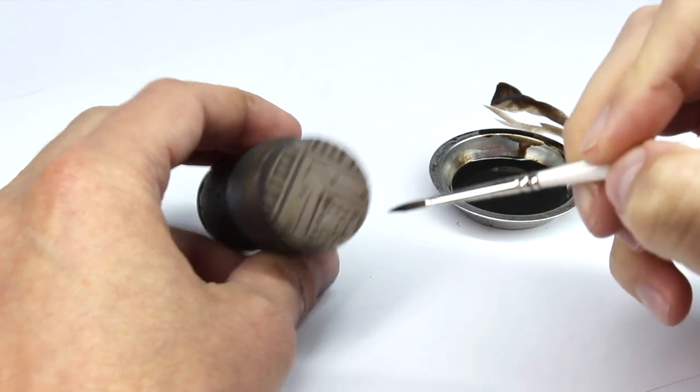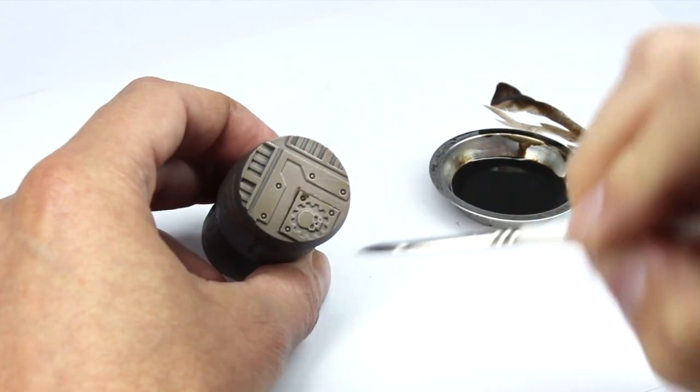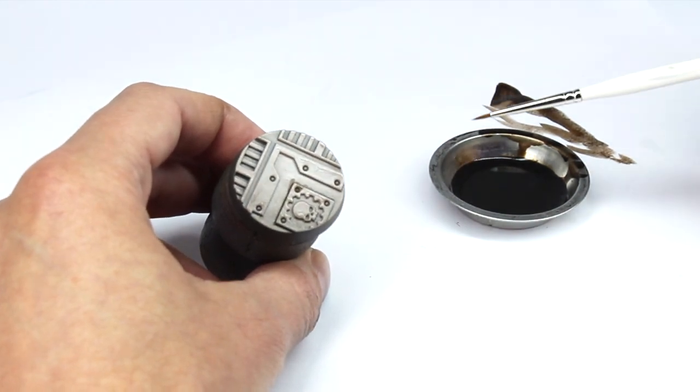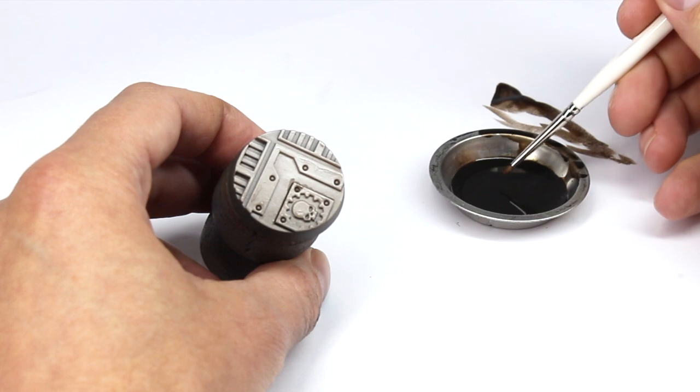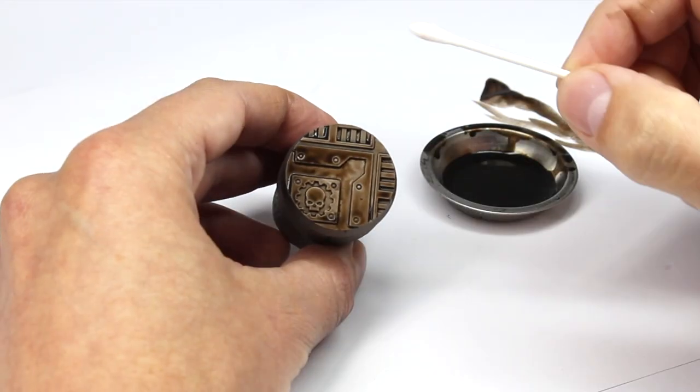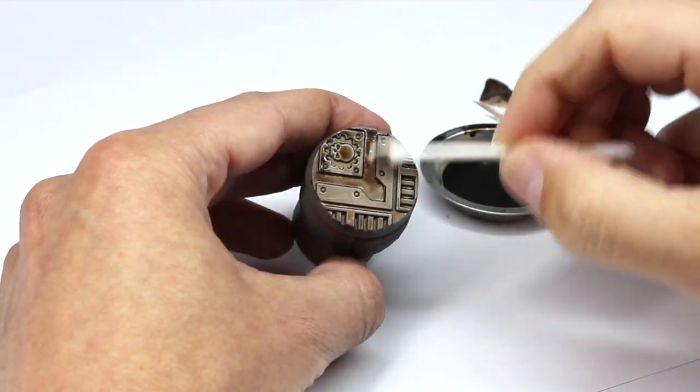Although easier to use than the Agrax Earthshade, you'll notice we're still getting some paint onto areas of the model that we don't want it. However, because we have a gloss surface and because we're using this different product, we have a big advantage. Whilst the paint is still wet, we can take a Q-tip and remove any of that excess.